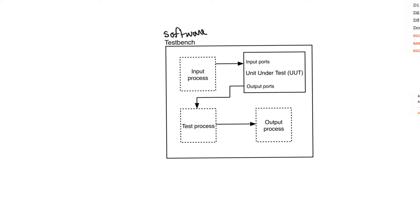The test bench is itself a VHDL design. It is a very unique design in that its entity does not have any ports. The software test bench normally doesn't have any ports — it just has an architecture. Within that architecture, you usually have only a single component, and that component is the unit under test. You instantiate a single instance of the unit under test, and this is the entity upon which we run the tests.